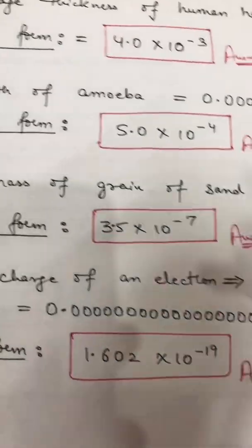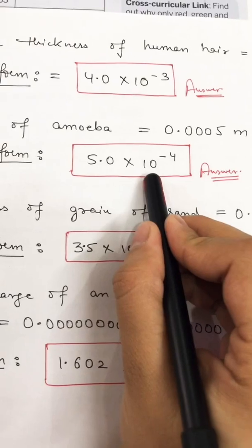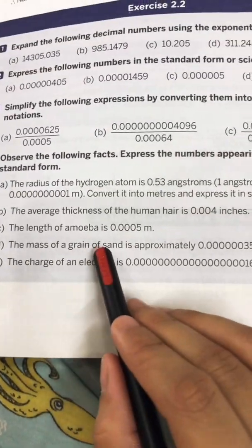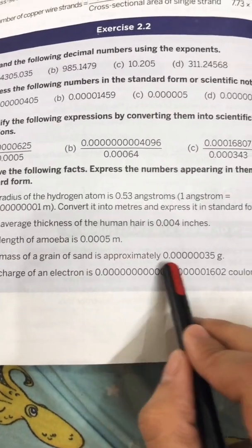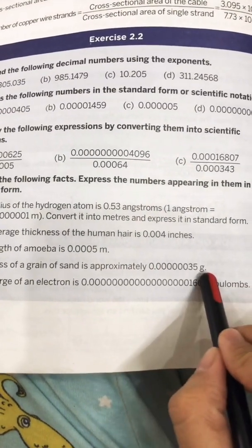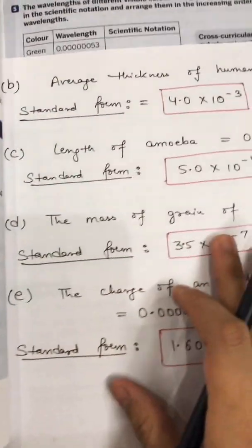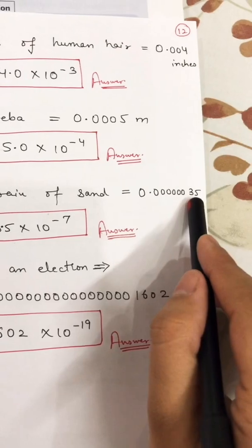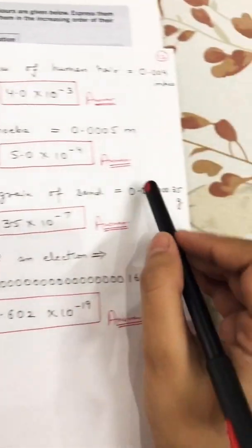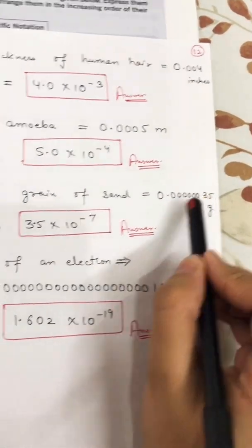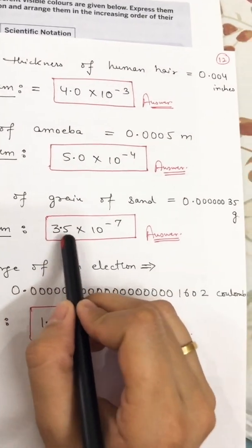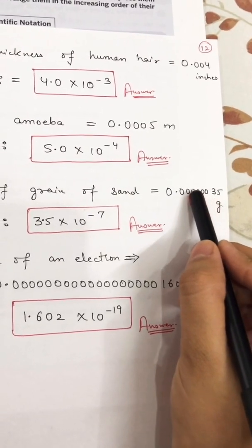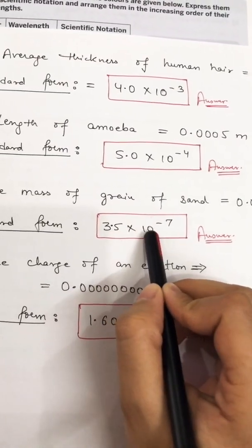Part d: the mass of a grain of sand is approximately 0.0000035 grams. Write in standard form — shift the decimal after the first digit, after 3: giving 3.5. How many digits before 5? One, two, three, four, five, six, seven. So the answer is 3.5 × 10 raised to power minus 7.